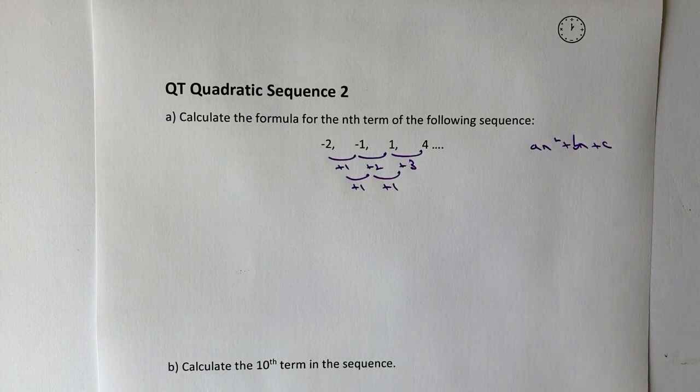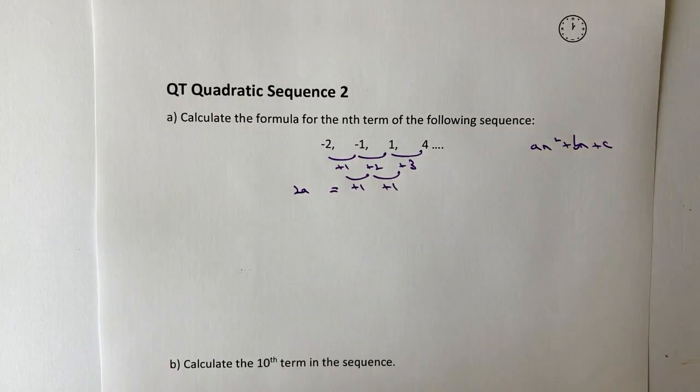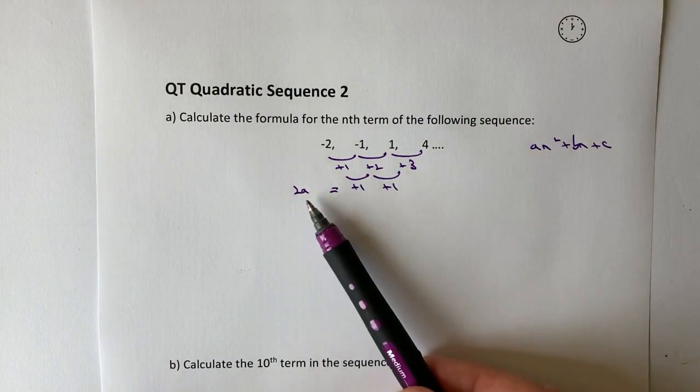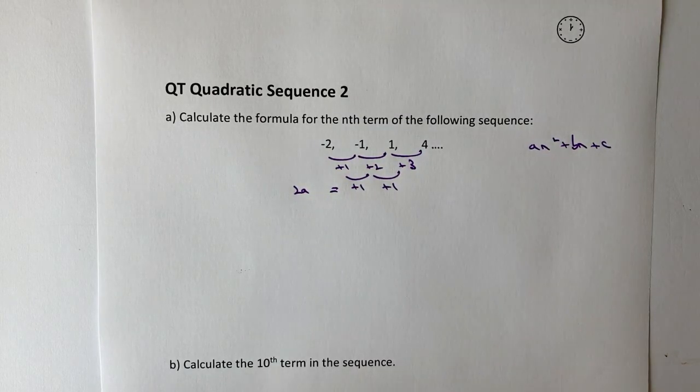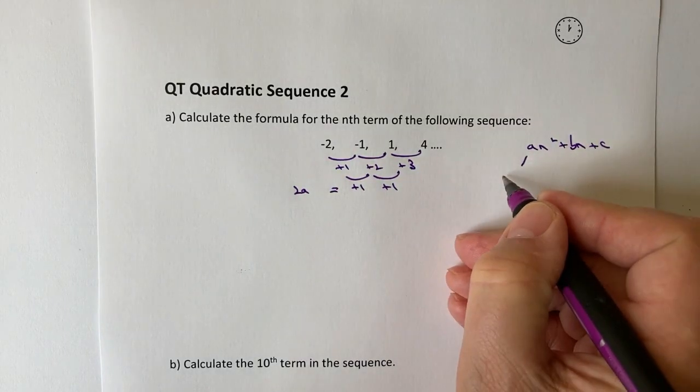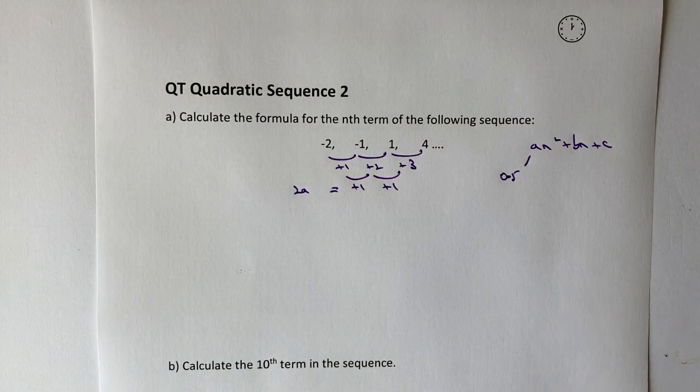The first thing is that the second difference is equivalent to 2a. So if 2a equals +1, if I divide through by 2, then it means that a must equal 0.5, or if you prefer it as a fraction, a half.